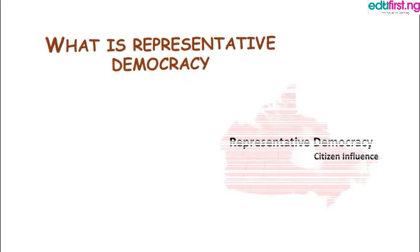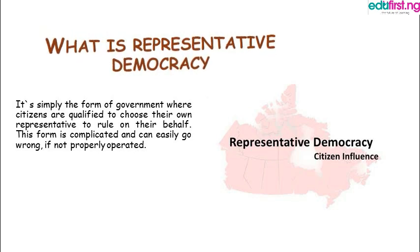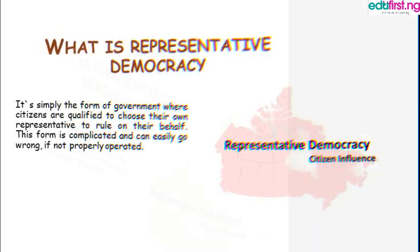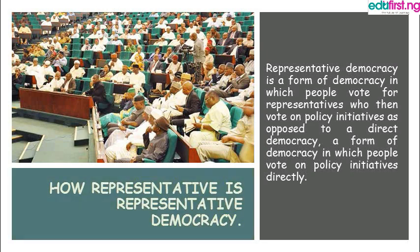What do we mean by representative democracy? It's simply the form of government where citizens are qualified to choose their own representative to rule on their behalf. This form of government is complicated and can easily go wrong if not properly operated. We can see that representative democracy is citizen influenced. Representative democracy is a form of democracy in which people vote for representatives who then vote on policy initiatives, as opposed to a direct democracy, which is a form of democracy in which people vote on policy initiatives directly.